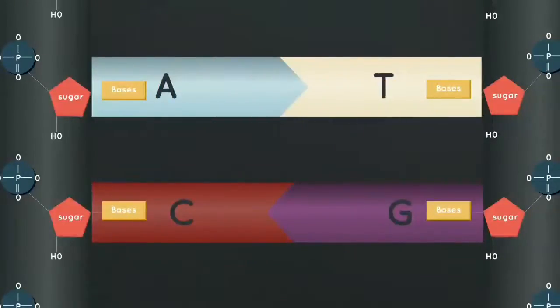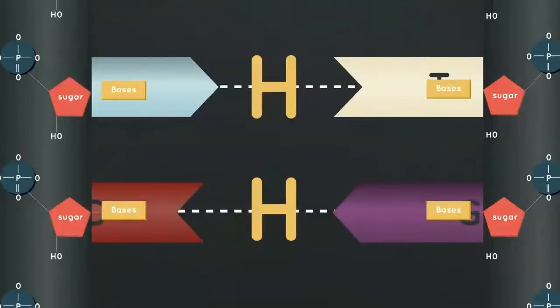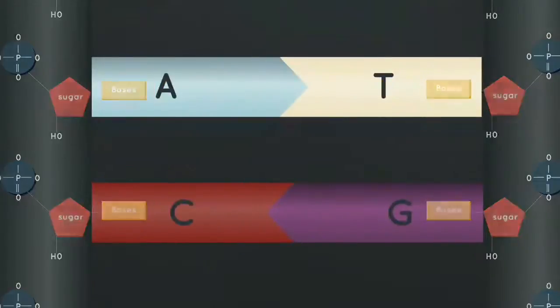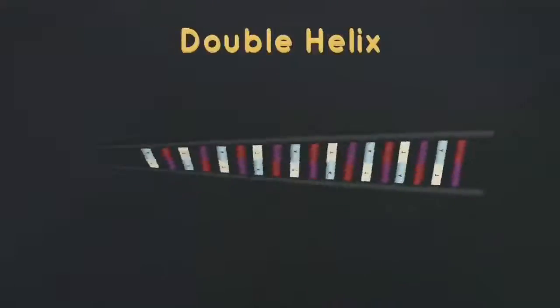Because A and T bases pair up, and C and G bases pair up. The bases pair up forming hydrogen bonds, and the DNA forms a twisted shape that is known as a double helix.